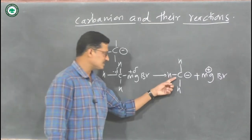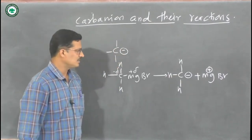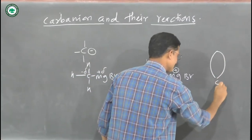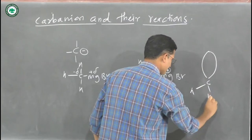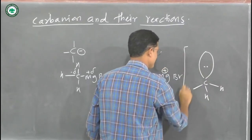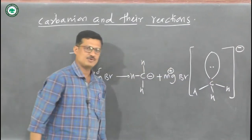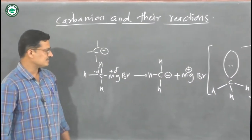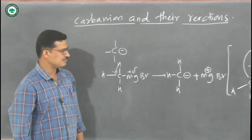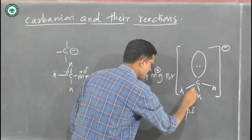When we think about this carbanion — for example, the methyl carbanion — it has three hydrogens and a lone pair, and it carries a negative charge. What is the hybridization of that carbanion? The carbon which carries the negative charge has sp3 hybridization.